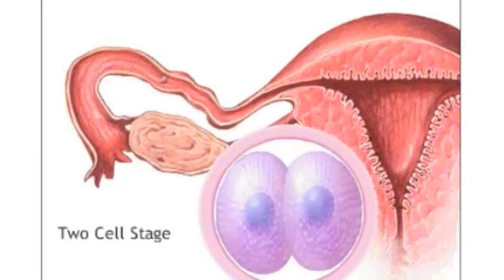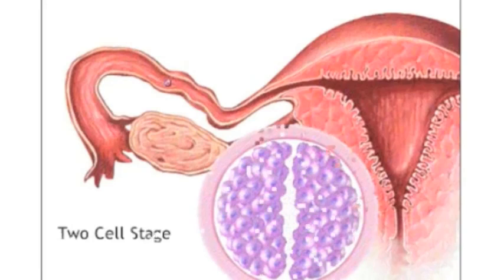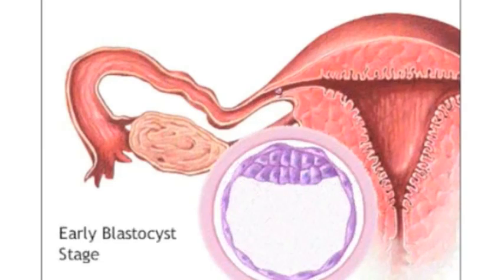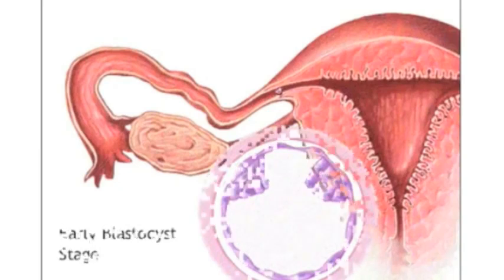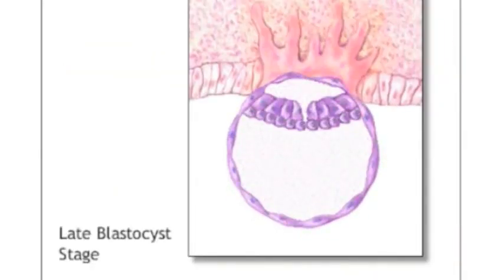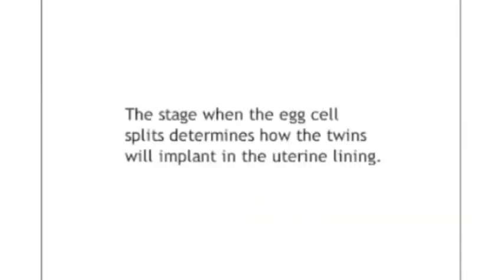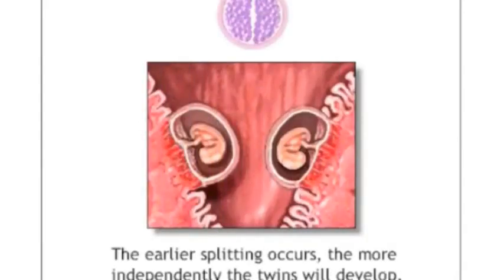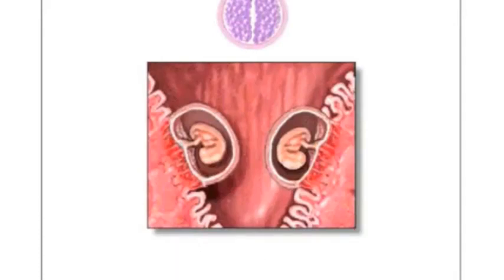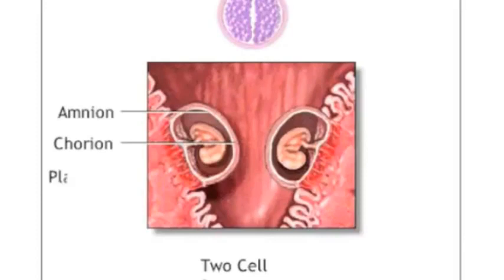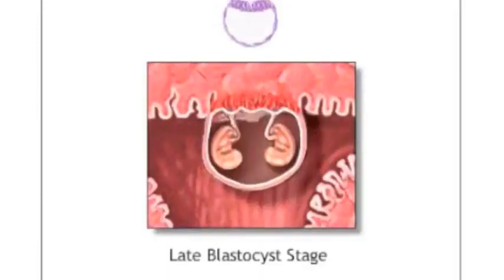The twins can divide at different three stages: at two-cell stage at day two, at early blastocyst stage at day four, or at late blastocyst stage at day six. The stage when the egg cell splits determines how the twins will implant in the uterine lining. At the two-cell stage, the earlier splitting occurs and the more independently the twins will develop — they will share different amnion, different chorion, and different placenta. At late blastocyst stage, they will share the same amnion, same chorion, and same placenta.